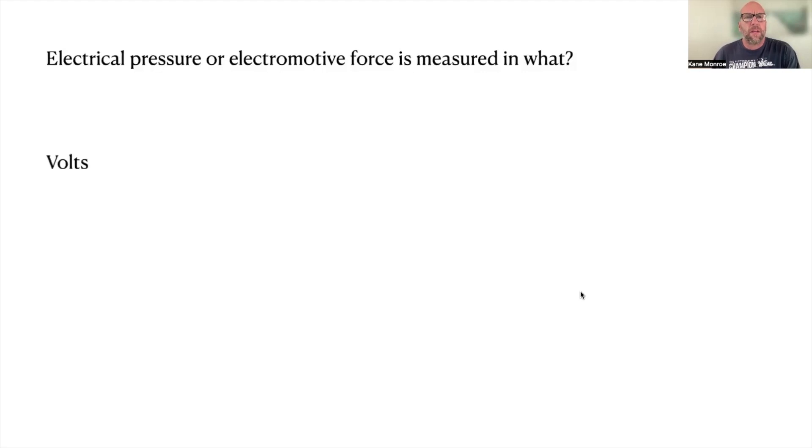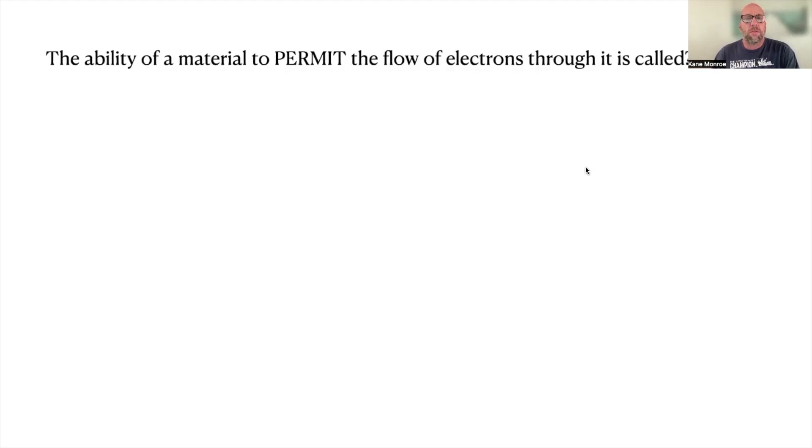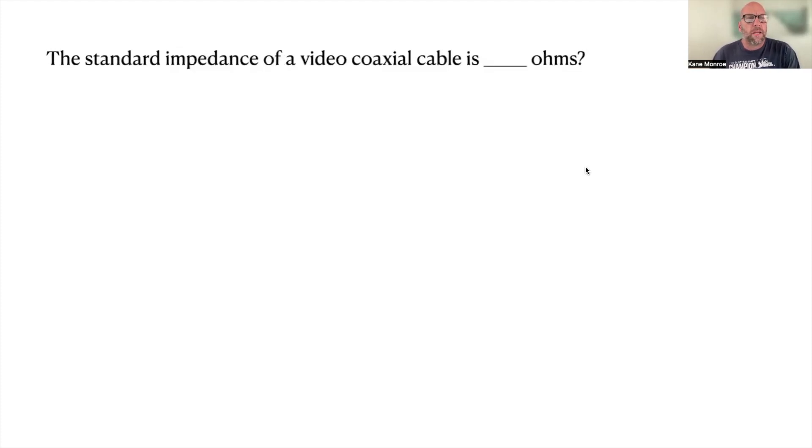Next one: The ability of a material to permit the flow of electrons through it is called conductance. So it conducts the voltage through there. And then a standard impedance of a video coaxial cable is how many ohms? This is not in your code book and it's 75 ohms.